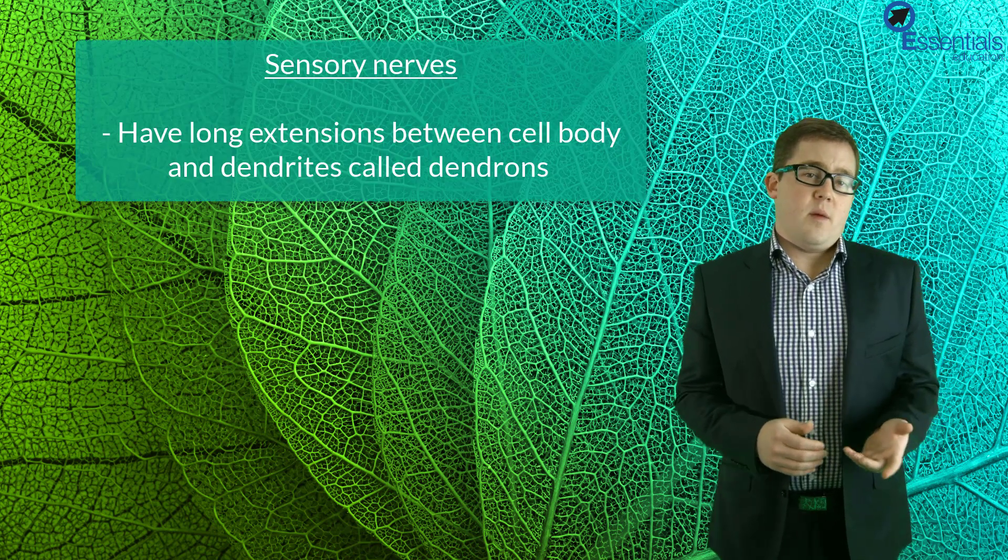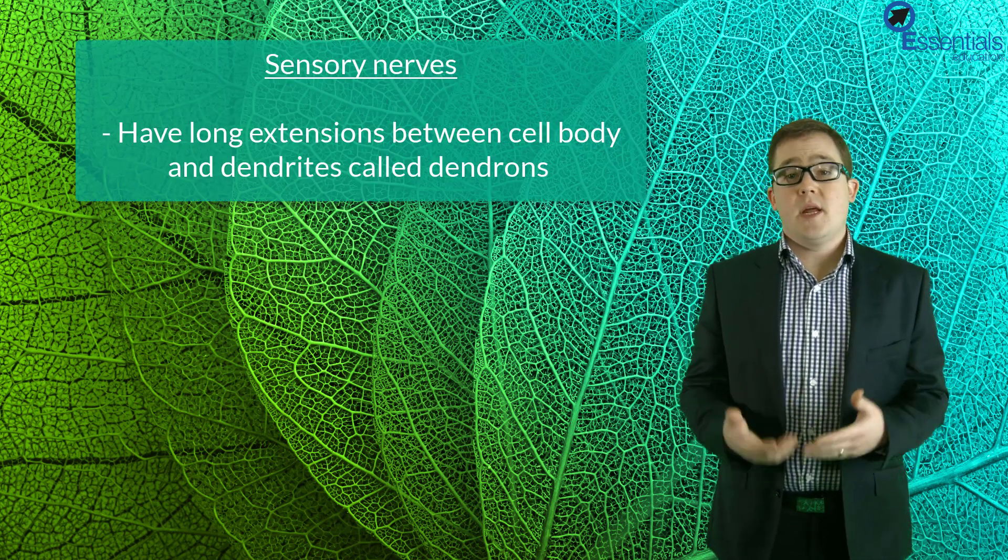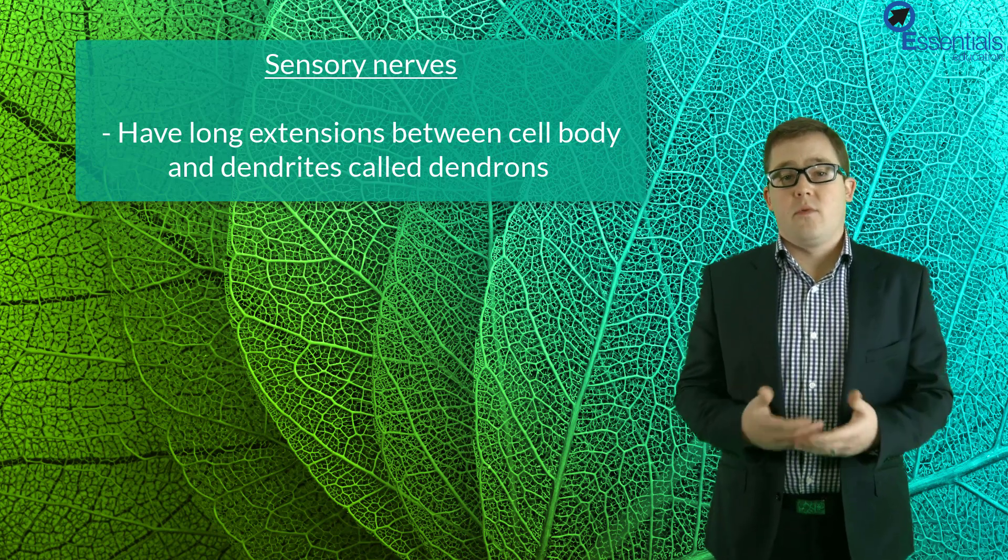Now these three nerves are all made up of the same components but have slightly different shapes and structures due to their specific jobs. Sensory nerves for example which collect information have long extensions between the cell body and the dendrites called a dendron, which acts as an extra long receptor.